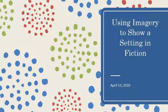Our goal today is to talk about how we use imagery to show a setting in fiction — not just to tell about what a setting is, but to actually show that setting and create an experience of that setting. One of the things I encouraged you to do over break was to think about where your story would take place, when it would take place, and what would be happening. All of that is detail that has to do with setting, and now we're going to start fleshing that out using imagery.